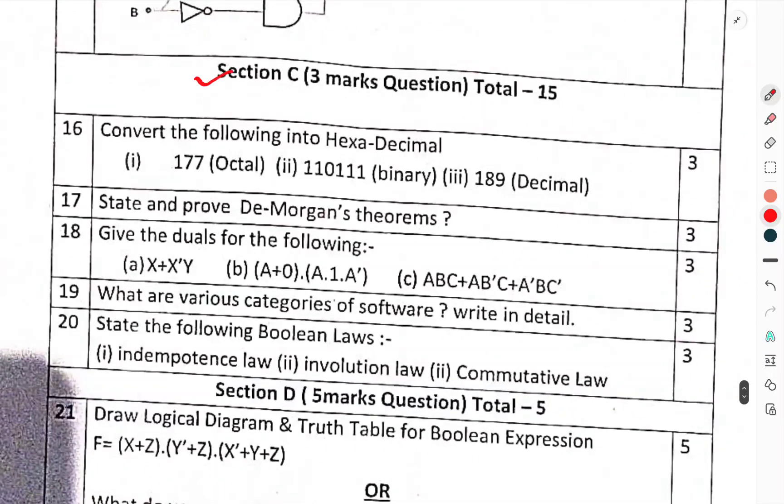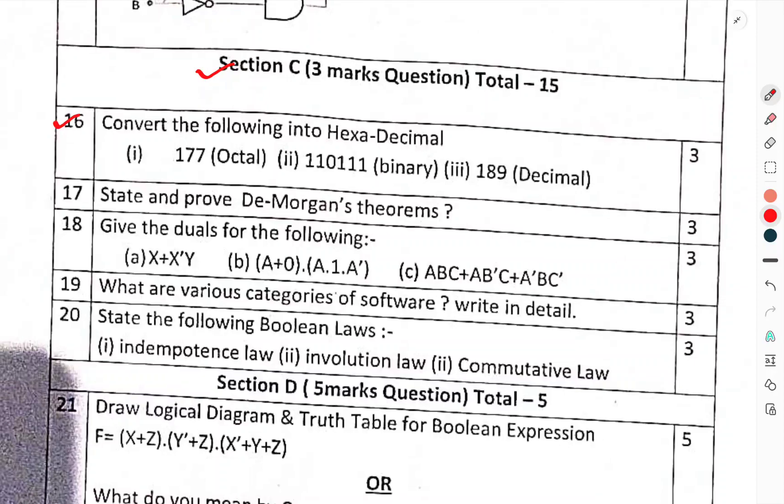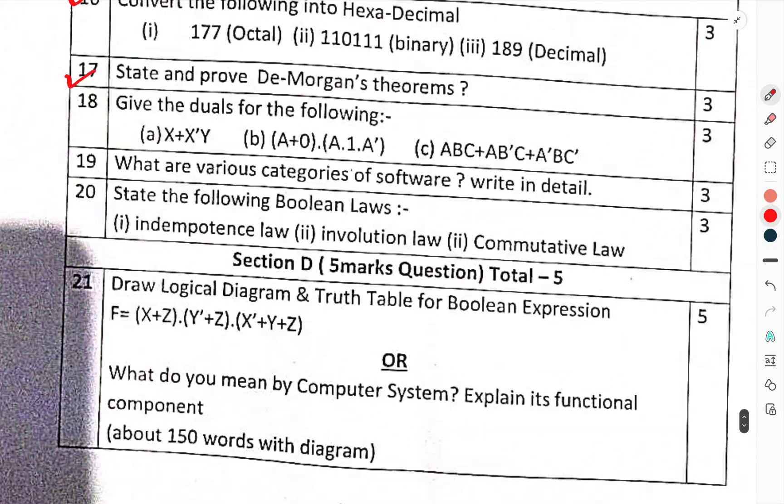Section C, 3 marks question, total 15 marks. Convert the following into hexadecimal: 177 octal and 10111 binary; 189 decimal. Question 17: State and prove De Morgan's theorems.